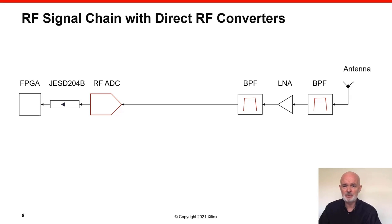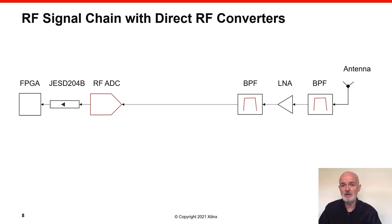This slide shows how the nature of the channel changed when high-speed RF-ADCs became available. With direct RF-ADCs we no longer need to mix, so we get rid of the mixer stage, the local oscillator, and several other analog stages, which is a major benefit. At this point we still need JESD channels to take large amounts of data coming out of the RF-ADCs and pass those to the FPGA for further processing.